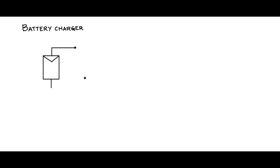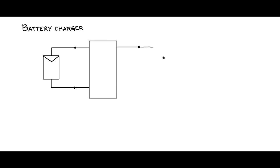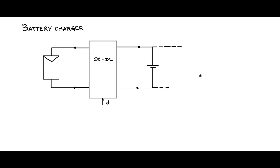Consider this PV module or PV array connected to a DC-DC converter, and then the output of the DC-DC converter is connected to a battery that needs to be charged. The DC-DC converter has a control input D, the duty cycle input. The voltage across the output terminals of the DC-DC converter is connected to the battery; therefore, the output voltage is fixed by the battery because the battery is a source. Across the battery, a load may also be connected.